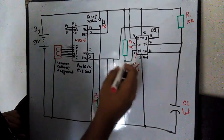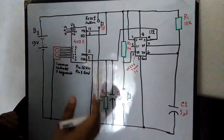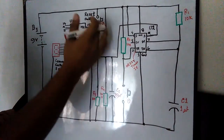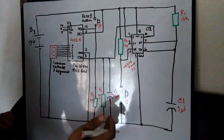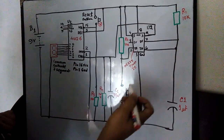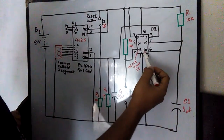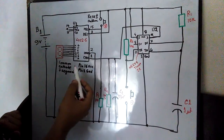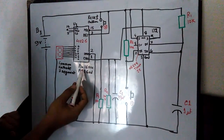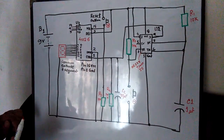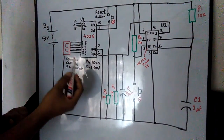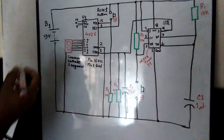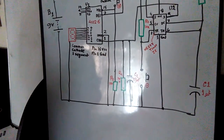So this is the best setup we have. The components are: a resistor, a capacitor, a 555 timer, a 4026 IC, and a 9V battery.